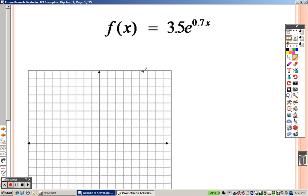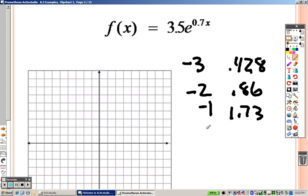Let's just go down to negative 3, we get .428, and negative 2, we get .86, negative 1, we get 1.73, 0, we get 3.5.